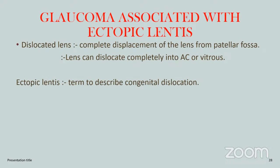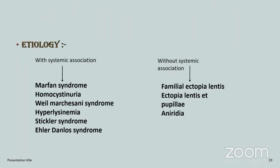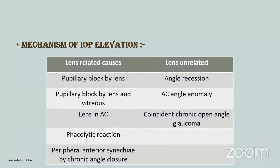Glaucoma associated with ectopic lens: dislocation is complete displacement of the lens from the patellar fossa. The lens can dislocate completely into the anterior chamber or vitreous. Ectopic lens is the term for congenital dislocation. Etiology with systemic associations includes Marfan syndrome, homocystinuria, Weill-Marchesani syndrome, hyperlysinemia, Stickler syndrome, and Ehlers-Danlos syndrome. Without systemic association: familial ectopic lens, ectopic lens at pupilla, and aniridia. Mechanisms of IOP elevation include lens-related causes — pupillary block by lens, pupillary block by lens and vitreous in AC, phacolytic reaction, and peripheral anterior synechiae by chronic angle closure — and lens-unrelated causes such as angle recession, AC angle anomaly, and coincidental chronic open-angle glaucoma.